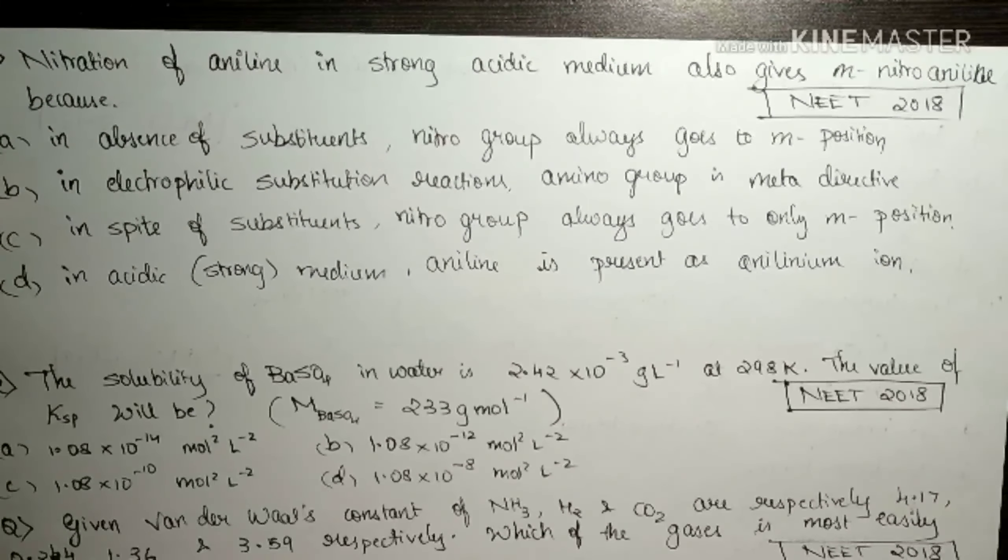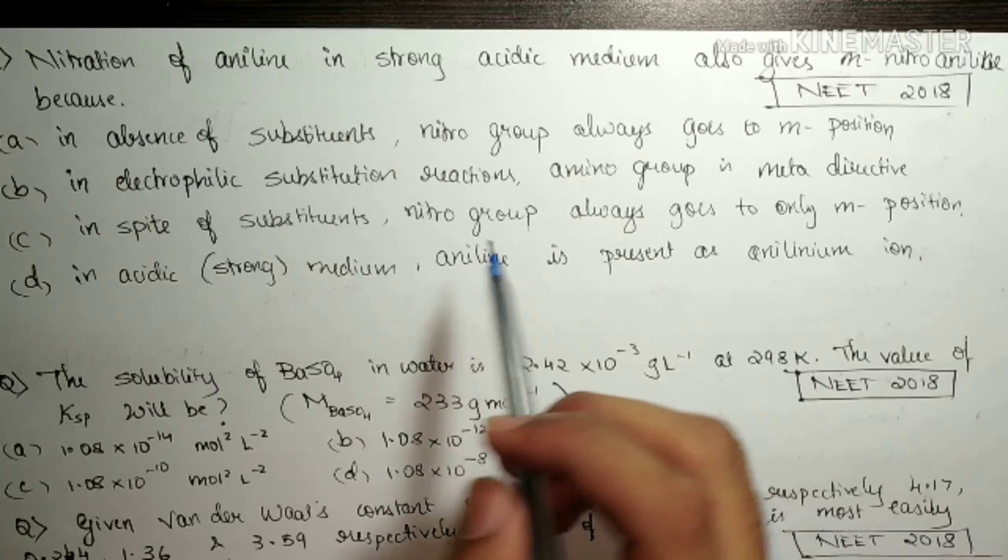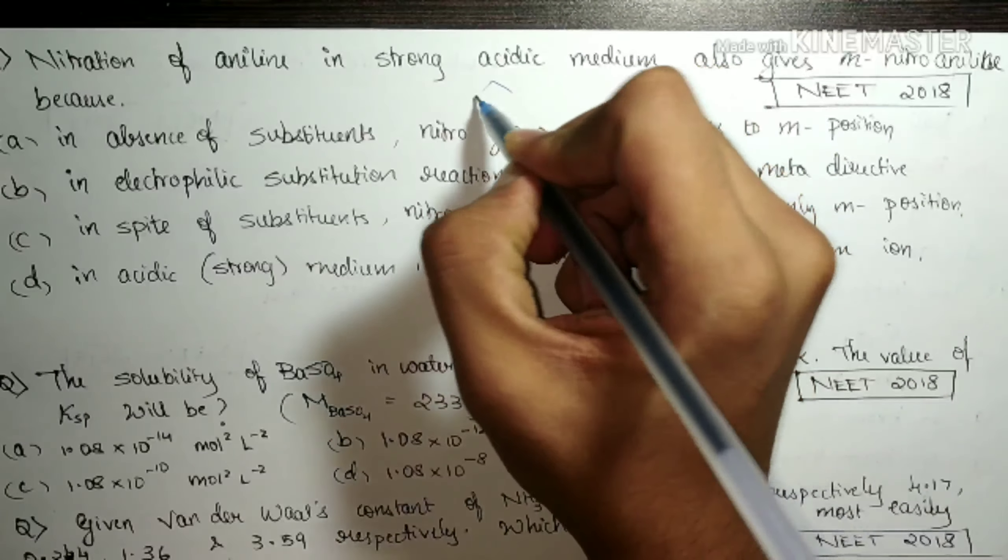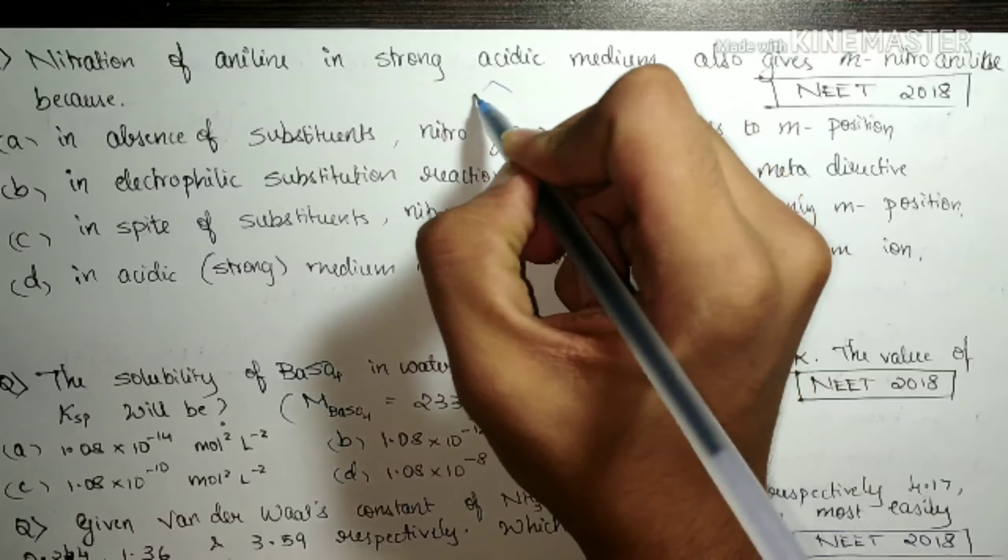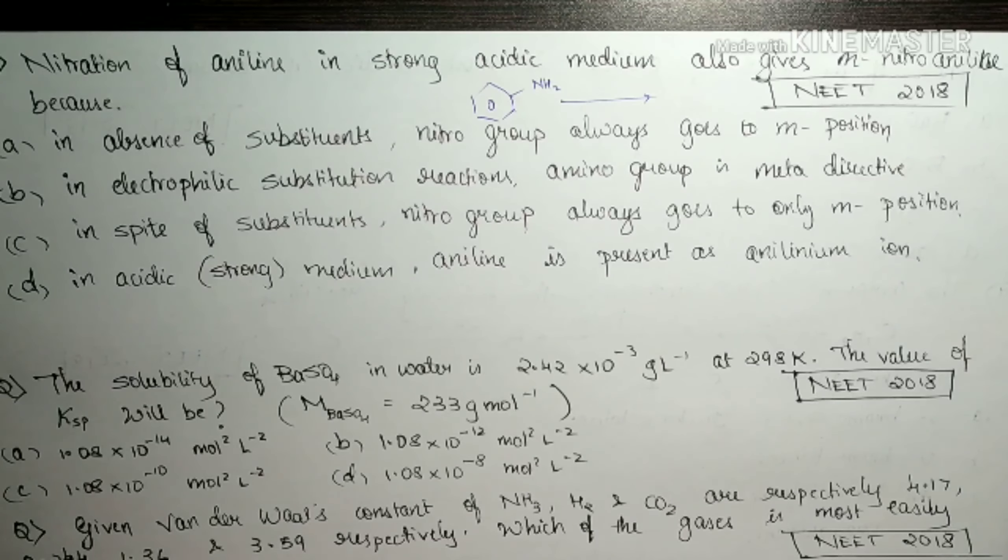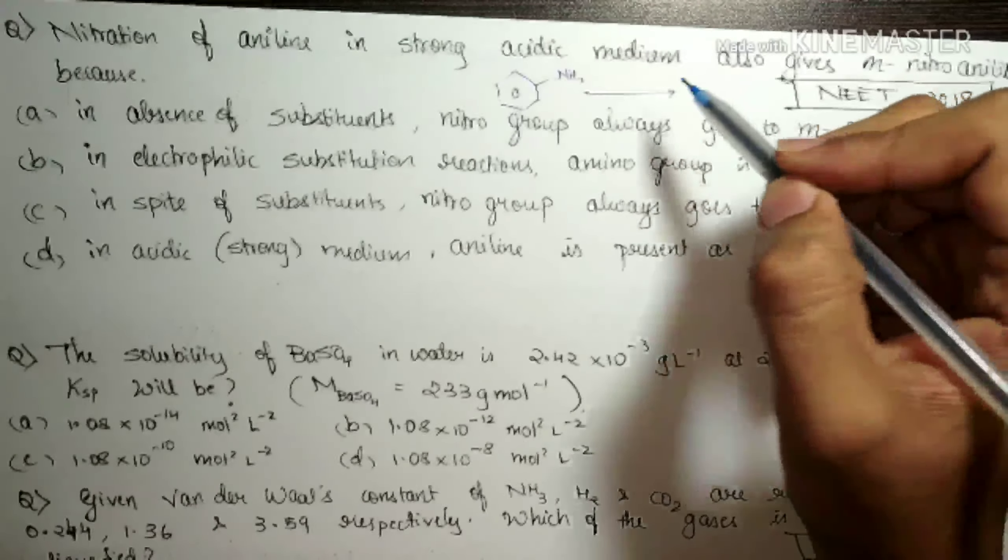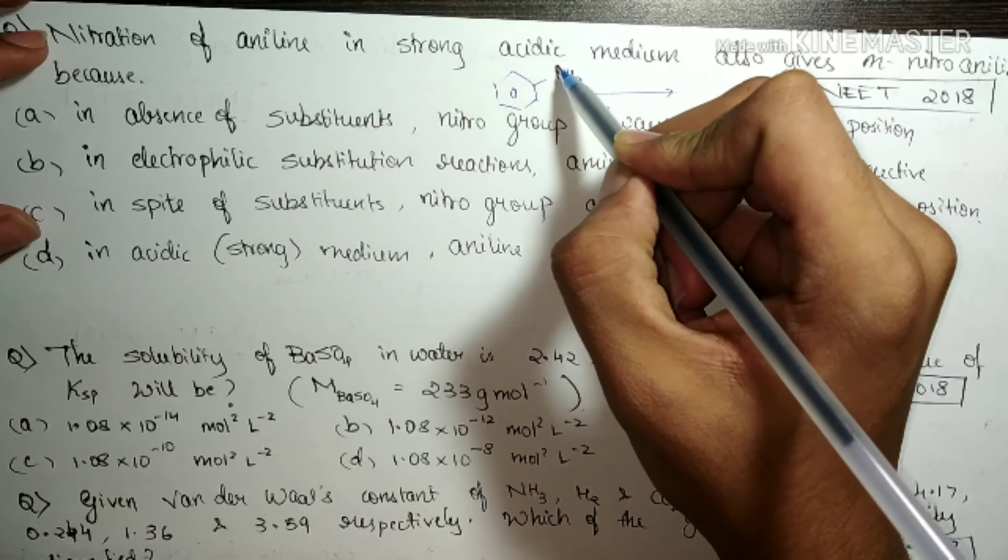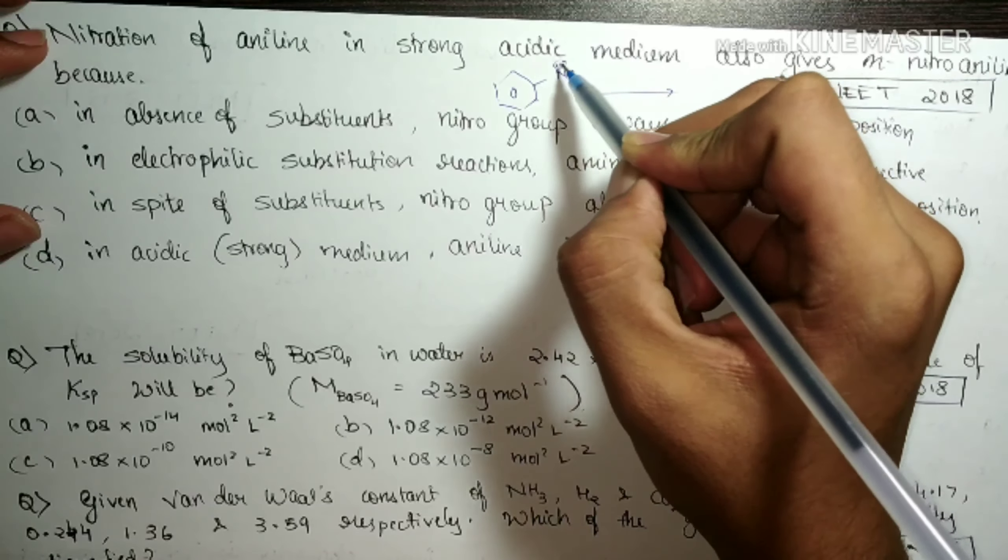It says, nitration of aniline in strong acidic medium also gives meta-nitro-aniline. Which one of the following reasons? You know that aniline looks like benzene with NH2 and you are nitrating with nitration mixture, concentrated H2SO4 plus HNO3. As expected, there is a lone pair which will provide electrons to the benzene ring, so it becomes ortho and para-directing group and you will be getting ortho-nitro-aniline and para-nitro-aniline. But they are telling we also get meta-nitro-aniline and what is the reason for that?